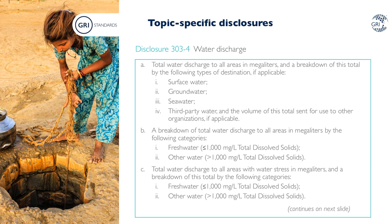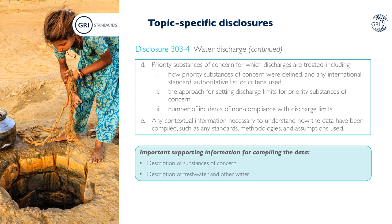Organizations are also required to report a breakdown of total water discharge to all areas and separately for areas with water stress by freshwater and other water. They are also required to report the priority substances of concern for which discharges are treated — including how they define priority substances of concern, whether they have used any international standard, authoritative list or criteria for this, the approach for setting discharge limits for priority substances of concern, and the number of incidents of non-compliance with discharge limits. Organizations must also report any contextual information necessary to understand how the data have been compiled, such as standards, methodologies and assumptions used, to improve comparability and credibility.